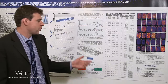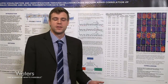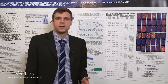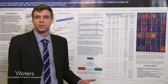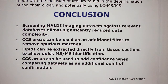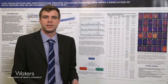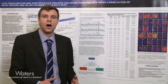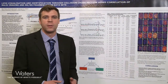In conclusion, screening multi-imaging data sets against the relevant databases allows for significant data complexity reduction. CCS areas can be used as an additional filter to remove spurious matches. Lipids can be extracted directly from tissue sections to allow for MS/MS identifications, and by using the CCS area as an additional qualifying factor when comparing these data sets, it allows for an increase in confidence that the matches in our identifications are the same as the peaks seen within our imaging data set.